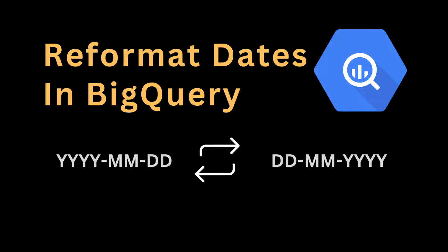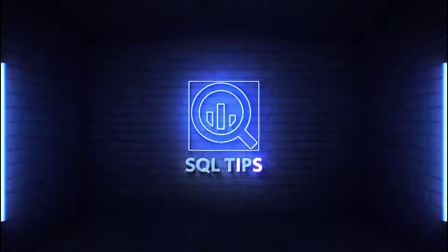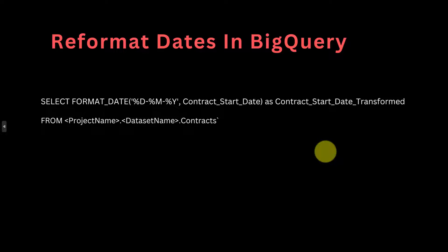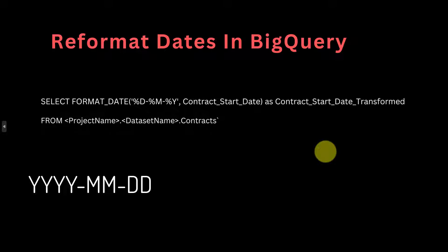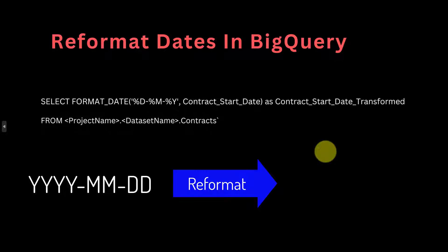Hello and welcome to this video on Google BigQuery. In this video I'm going to show you how to reformat dates in BigQuery. Let's say you have a date column within a table and the format for that date column is the year-month-day format, but you want to change that format to the day-month-year format.